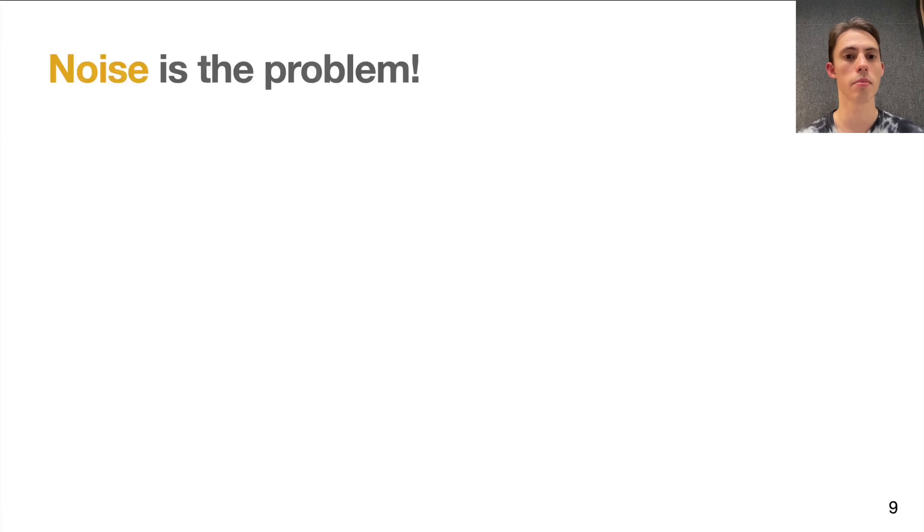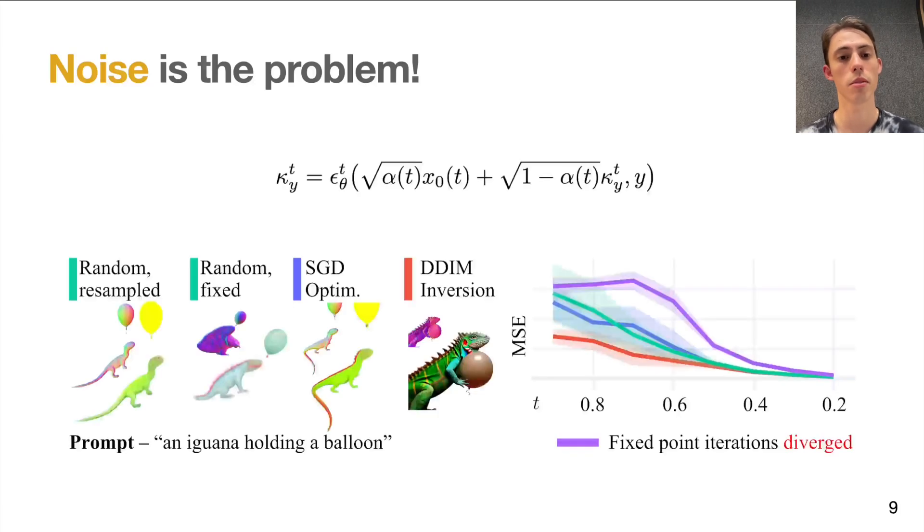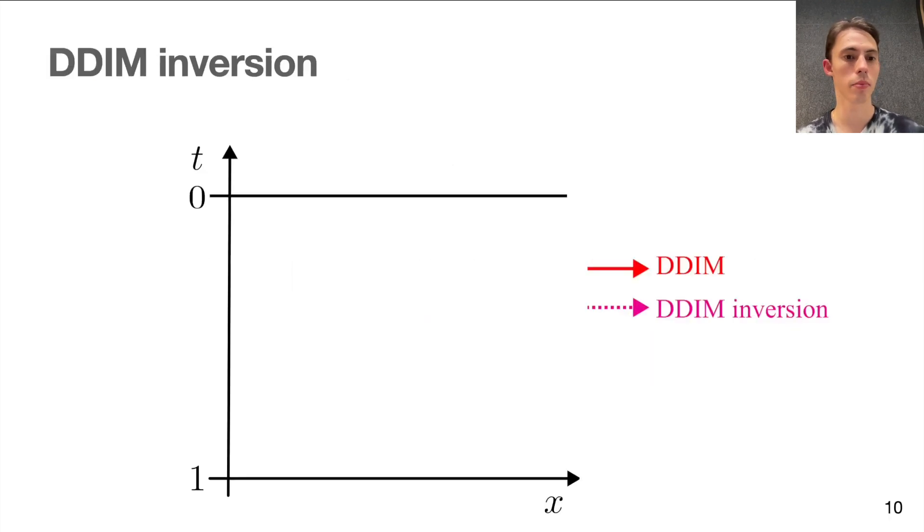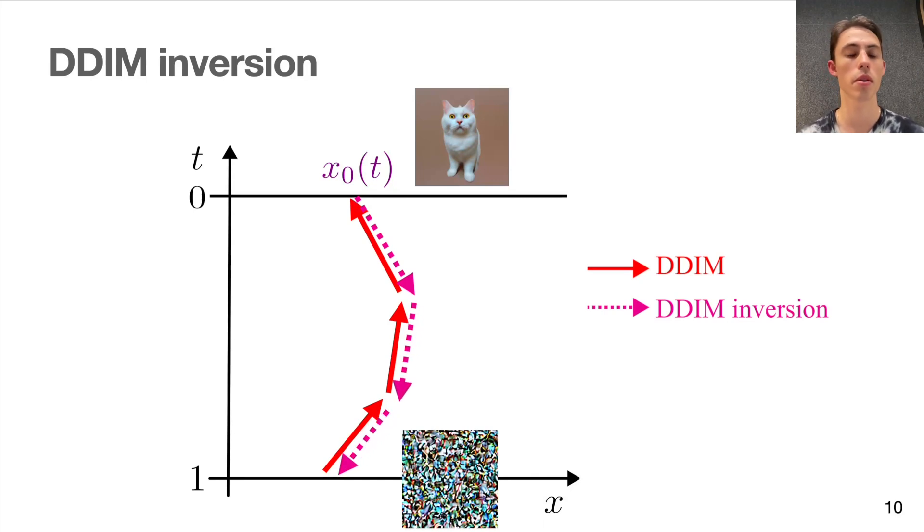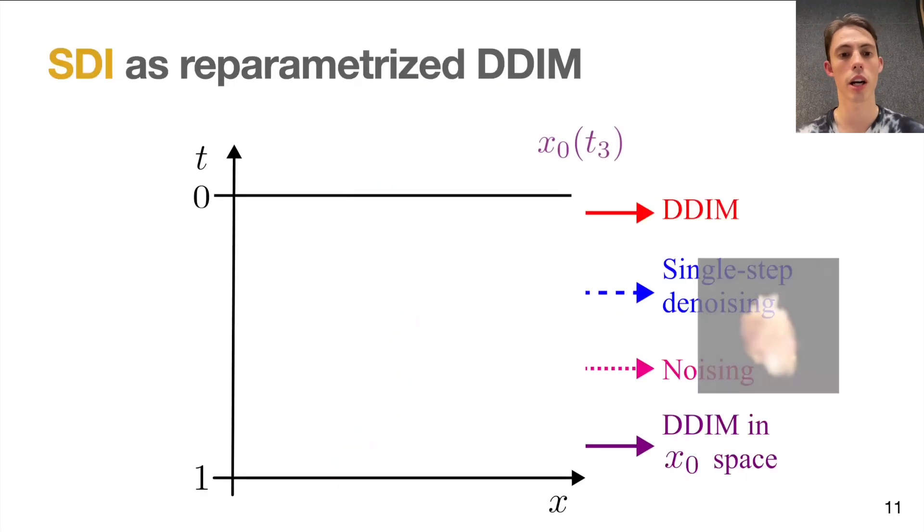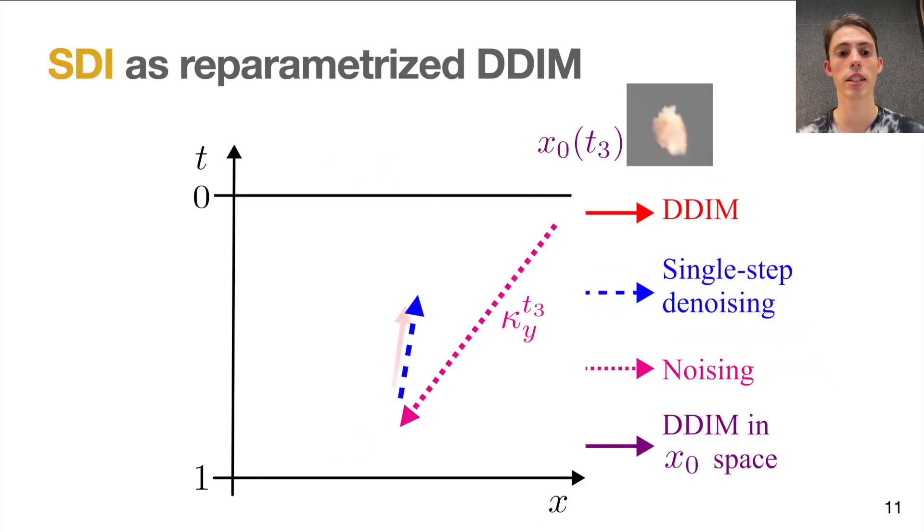In our work, we analyze multiple strategies for solving the fixed point equation. We found that running DDIM inversion is the most effective approach. Indeed, as DDIM is a deterministic process, multiple previous works suggested algorithms to invert generated images back to the noise terms they were generated with. By doing so, our update steps are being assigned to the correct DDIM trajectories on each update step.